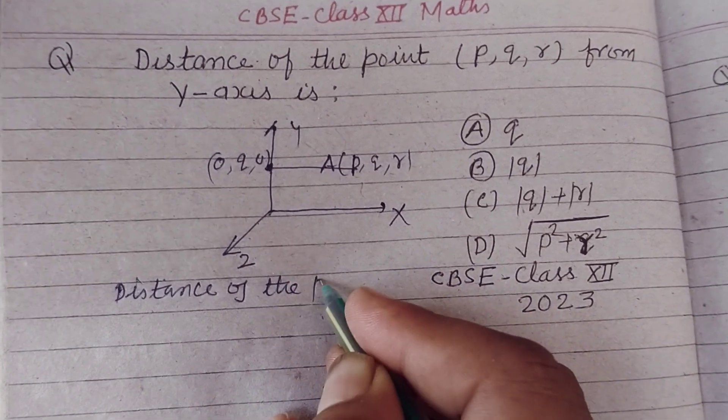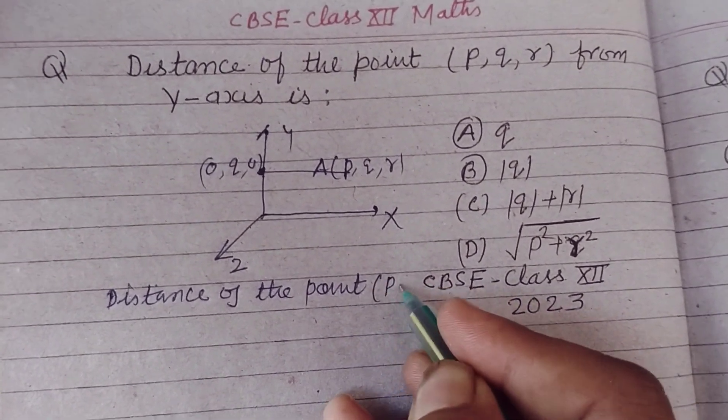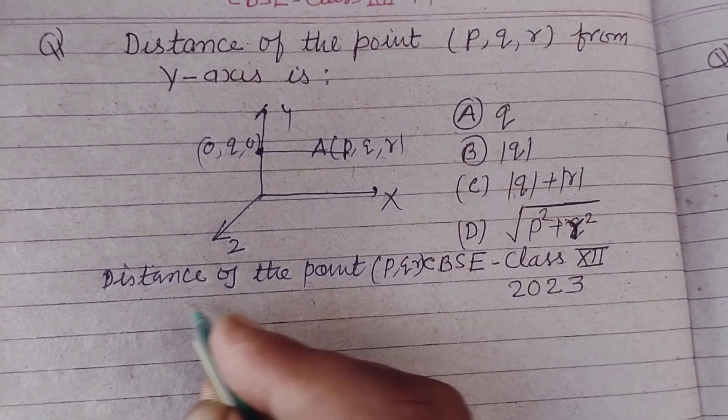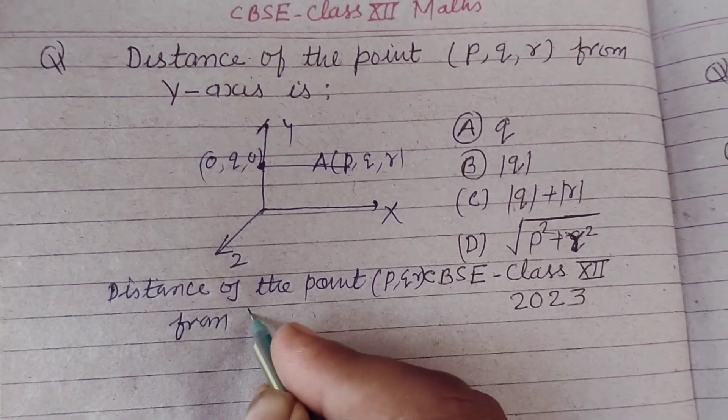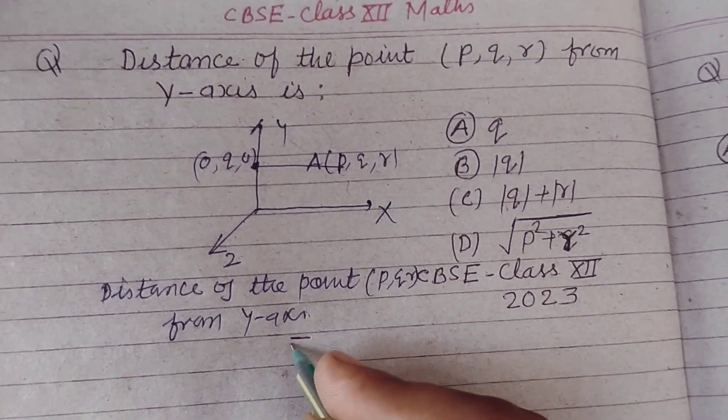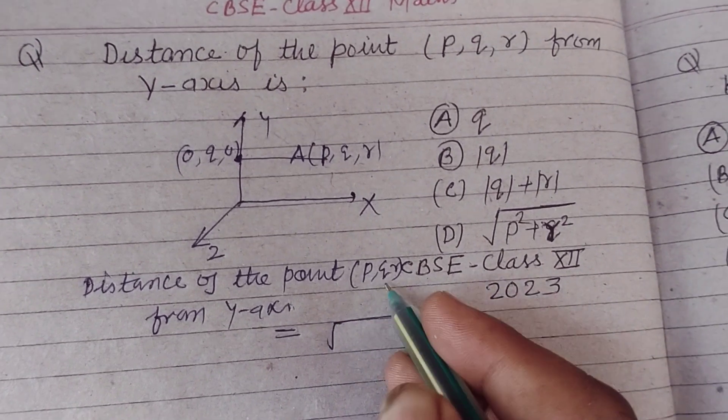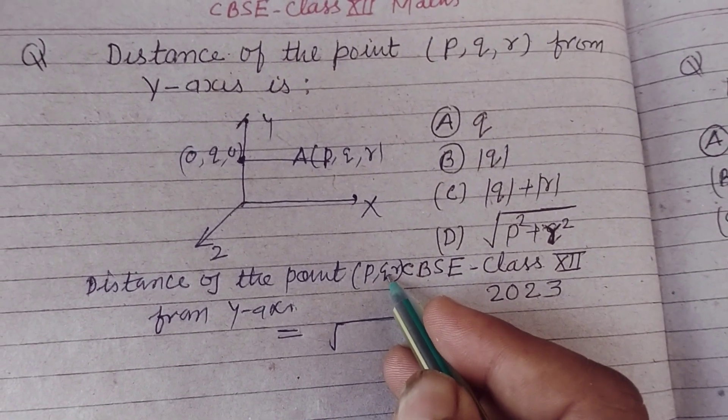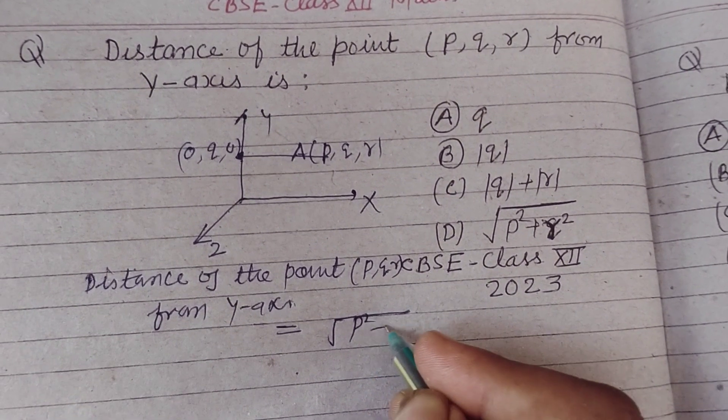point (P,Q,R) from y-axis will be - we leave the coordinate of y-axis which is Q - so this is P squared